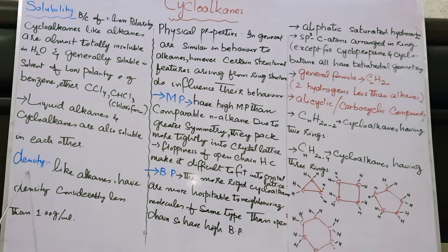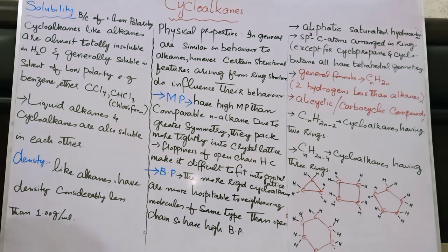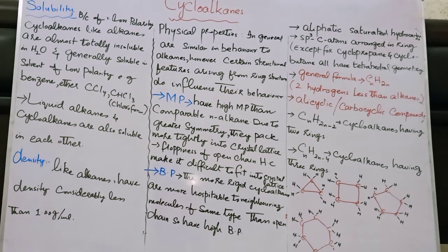When we talk about density: like alkanes, cycloalkanes have a density considerably less than 1 gram per milliliter. That's all for today's introductory lecture on cycloalkanes — we covered an introduction and some physical properties. Thank you.